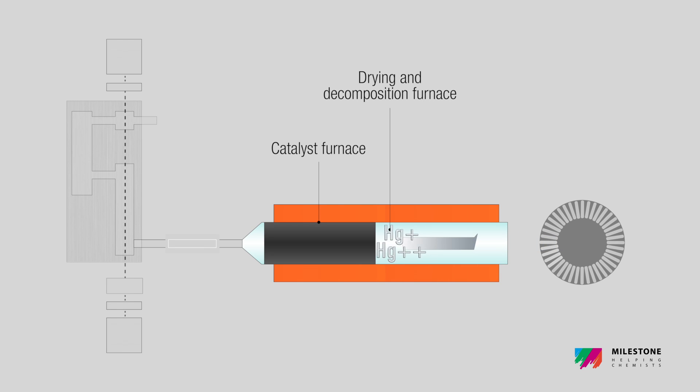Mercury and other combustion products are released and flow through the catalyst, where all interference is eliminated, while mercury is selectively reduced and trapped by gold amalgamation.